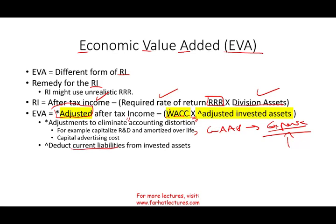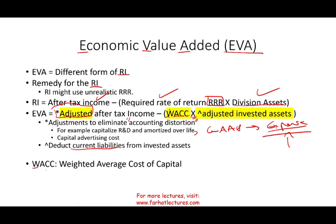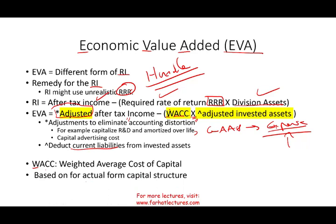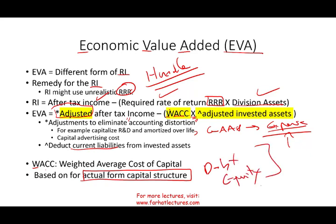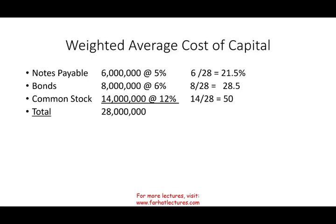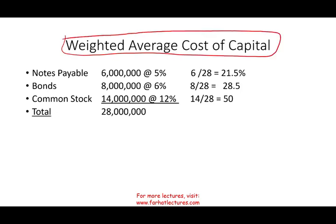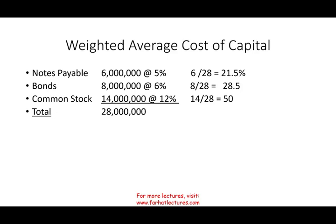For invested assets, if we have any current liabilities, we deduct them from the invested asset. We also need to compute WACC — the weighted average cost of capital. Remember, the required rate of return is the hurdle rate the company can set arbitrarily. Instead, we base our rate on the actual capital structure — looking at our debt and equity — to find what it actually costs us. In a managerial or cost accounting course, WACC will usually be given to you, but let me show how it's computed.